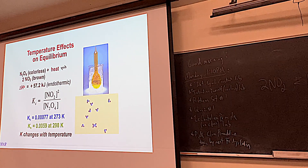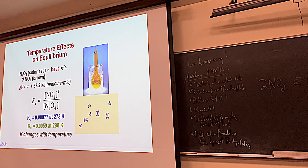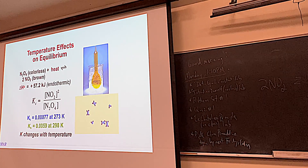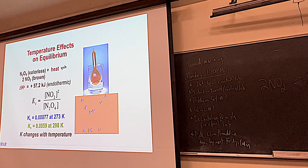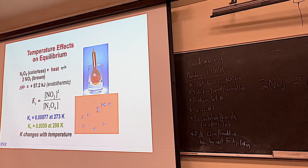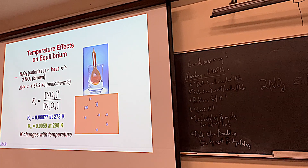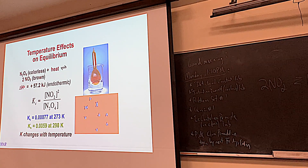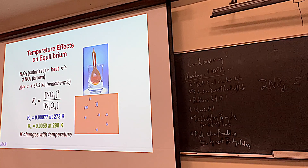In a sealed flask with a mixture of colorless N2O4 and brown NO2 at equilibrium: when heated, N2O4 decomposes into NO2, creating more brown gas until equilibrium is reached at the higher temperature. At the warmer temperature, you still have N2O4 — it's not zero — but you have relatively more NO2 than at the colder temperature. That's the nature of equilibrium.